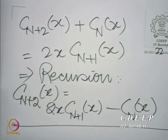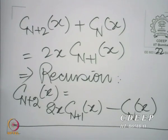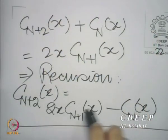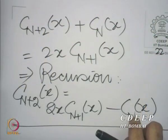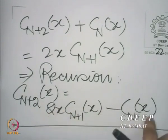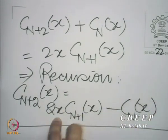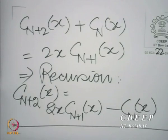This recursion takes you to successive Cn(x) starting from C0 and C1. By induction, we can construct all Cn(x). This also makes it clear that all Cn's are polynomials — because if Cn is a polynomial in x and Cn+1 is a polynomial in x, then multiplying 2x by a polynomial and subtracting another polynomial must give a polynomial. Furthermore, if Cn is of degree n, then Cn+2 will be of degree n+2, so Cn is of degree n.